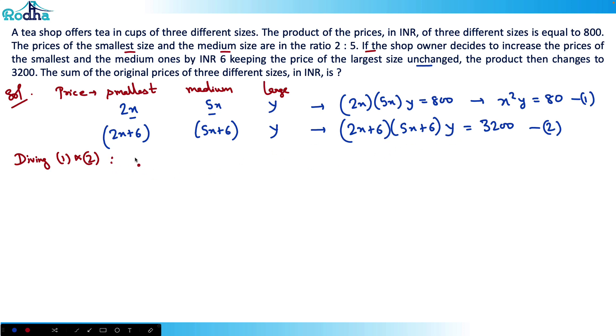Dividing 1 and 2, y will get cancelled, so what I am getting here is 10x² / [(2x + 6)(5x + 6)] = 80/3200 = 1/40.